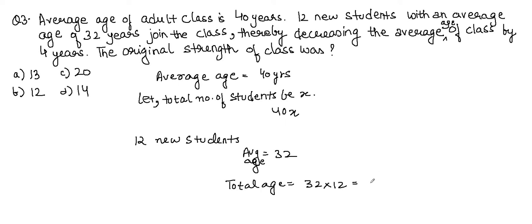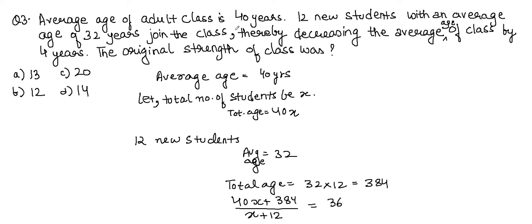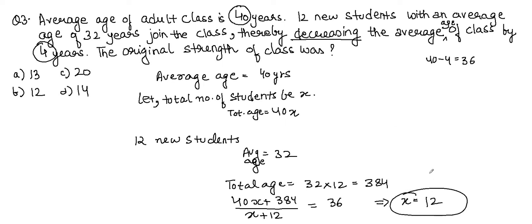Total age of new students = 384. Now: (40x + 384) ÷ (x + 12) = 36, because the average decreased by 4 years from 40 to 36. Solving this equation gives x = 12. The original strength of the class was 12. The correct answer is B.